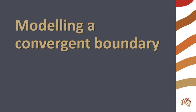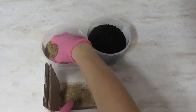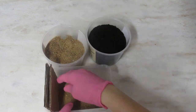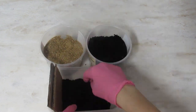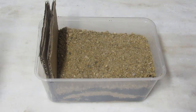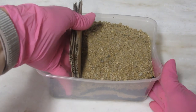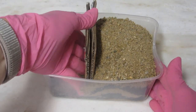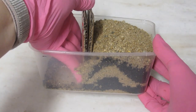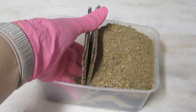To make your convergent boundary model, place the divider at one end of the container. Layer sand and soil in the container — don't fill it up to the rim. Move the divider towards the center of the container and observe what happens to the surface and the layers. This simulates the pushing forces at a convergent boundary.